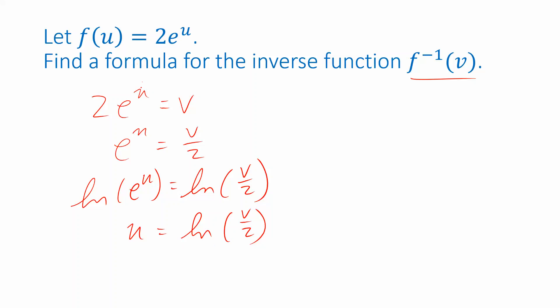Now I've isolated the u and so that's telling me what u I plug in to get an output of v. So f inverse of v is this function natural log of v over 2.